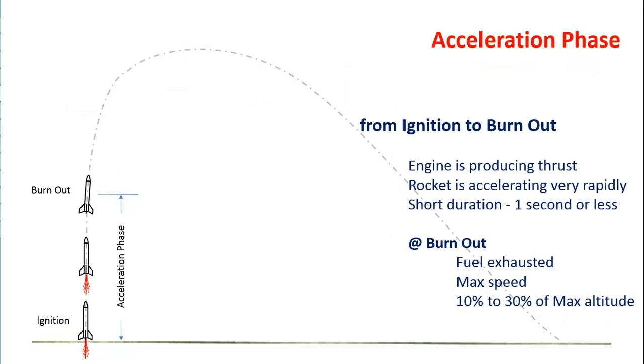The acceleration phase starts when the engine ignites and ends when the engine burns out. From ignition to burnout, the engine is burning fuel. It is producing thrust. This makes the rocket accelerate upward very rapidly.